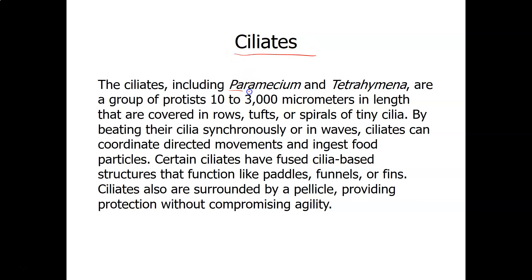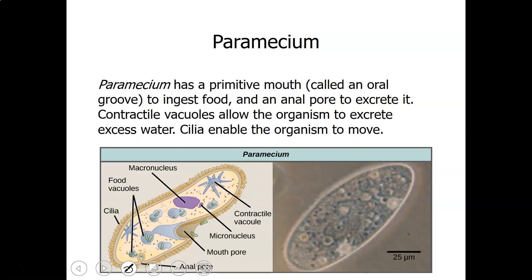The third group of alveolates is the ciliates. We've already seen a paramecium — it is covered with cilia and surrounded by a pellicle, which is sort of like a shield of armor that still allows movement and flexibility. Here is an illustration of a paramecium showing just how complex it is.